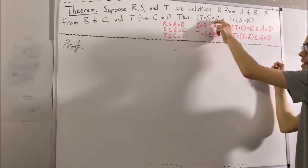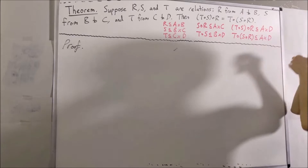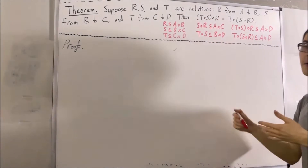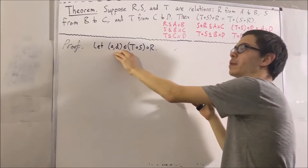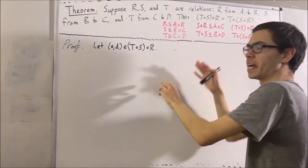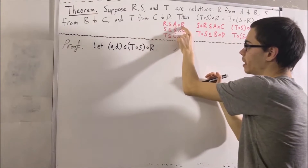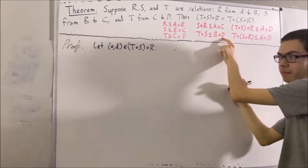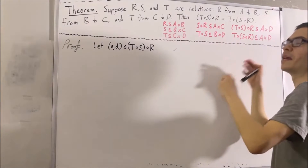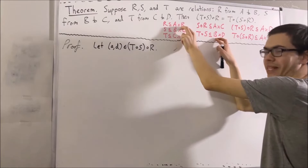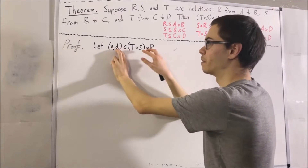Everything in this set is an ordered pair, because everything in this set is part of a Cartesian product. So let's say that our arbitrary element is the ordered pair (a, d). We are an element of a composition — specifically, a composition of r and (t ∘ s). Now r is a relation from A to B, and t ∘ s is a relation from B to D, so B is our intermediate set. This means we can choose an element b in B such that (a, b) is an element of r, and (b, d) is an element of t ∘ s.